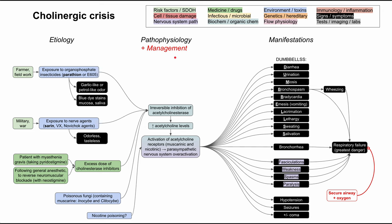For management, the first thing is to secure the airway and give oxygen if needed — always follow the ABCs. You should also decontaminate the patient if they've been exposed to nerve agents or organophosphates still on their clothes or hair. Make sure to use PPE for yourself when decontaminating, because as a medical worker you don't want to injure yourself in the process of helping your patient.